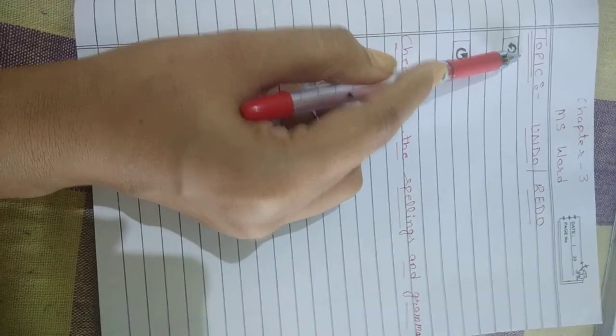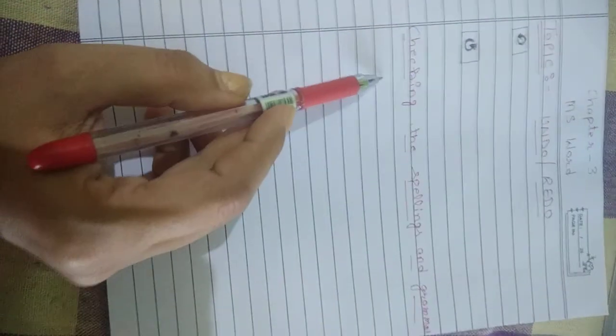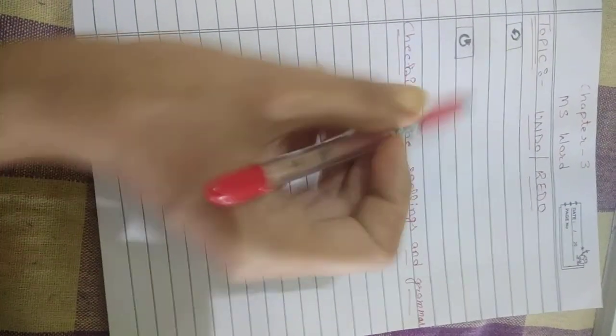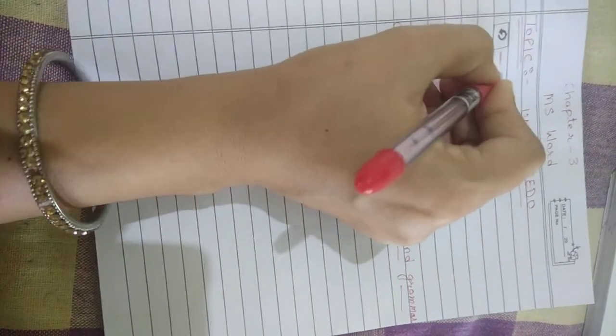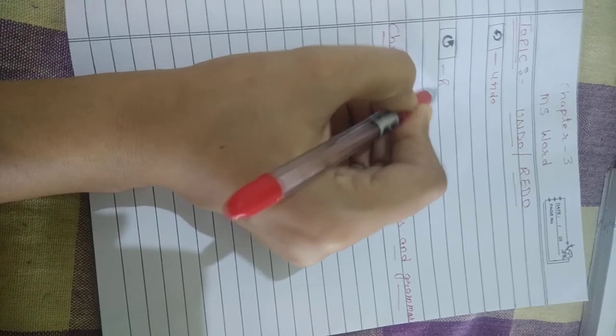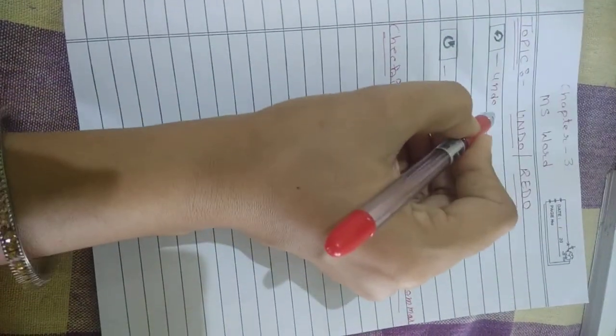Today's topic is undo and redo, and checking spelling and grammar. First, we will start with undo and redo. This is the symbol of undo, and this is the symbol of redo.